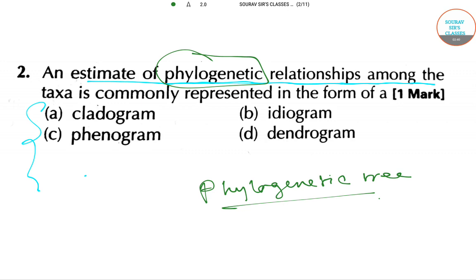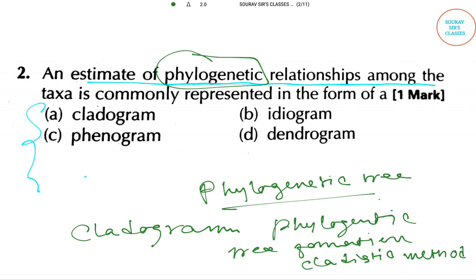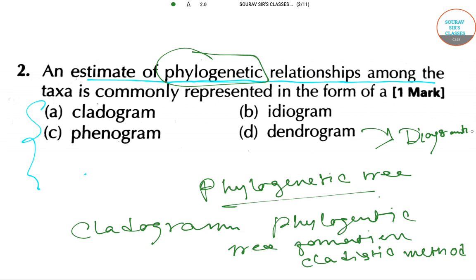A cladogram is the phylogenetic tree formation by the cladistic method. A dendrogram is the diagrammatical representation, and an ideogram is the representation in graphical form. So the answer here will be cladogram, that is option A.